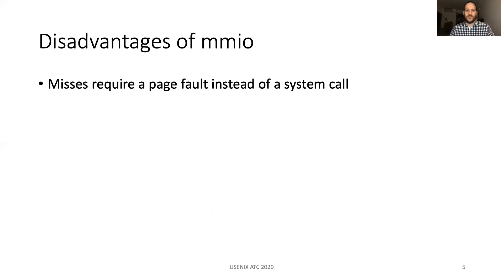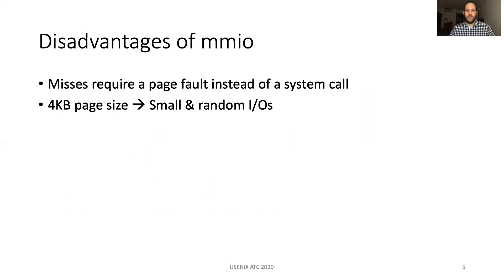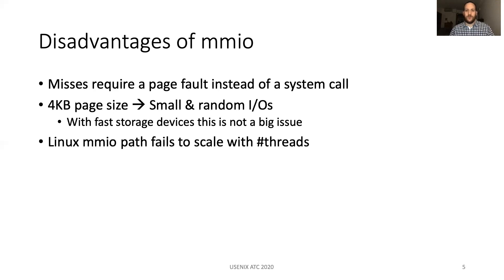However, misses in memory-mapped I/O require a page fault instead of a system call, which can introduce overhead. With memory-mapped I/O, the 4KB page size introduces random I/O operations in the common path. With fast storage devices, this is not a big issue. More importantly, the Linux memory-mapped I/O path fails to scale with an increasing number of threads.